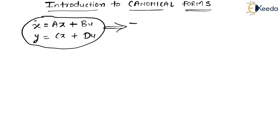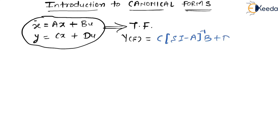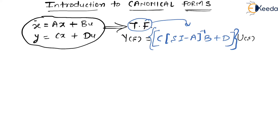We have seen how to get the transfer function out of the state space model. In order to do so, we have written that y is nothing but C into (sI minus A) inverse into B plus D, right, into U(s). Whatever is written in blue is nothing but the transfer function — that is what we have understood.